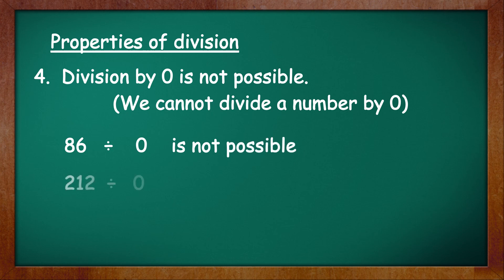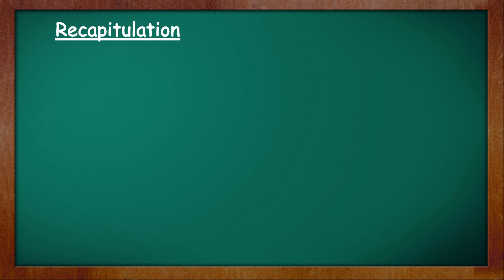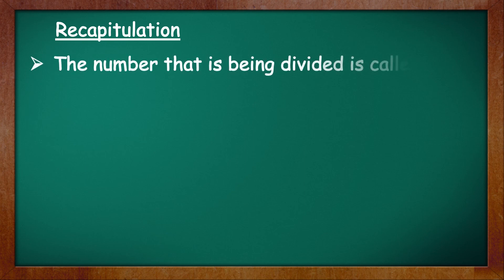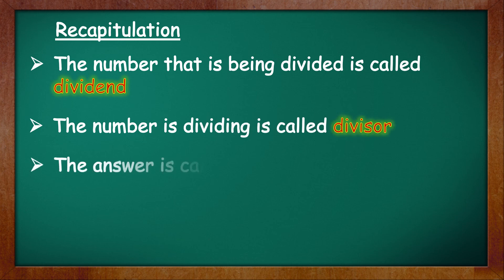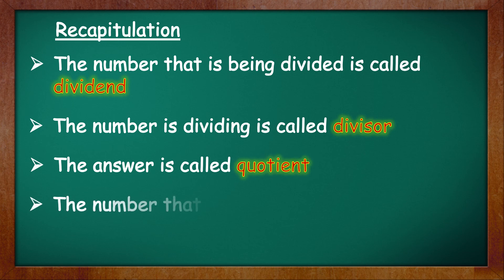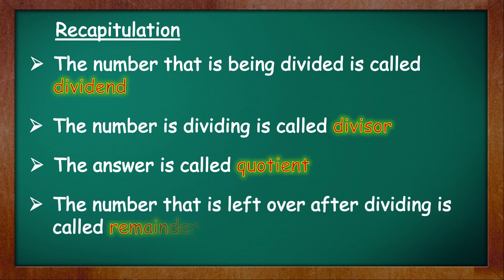A quick recapitulation of the terms of division before we end: the number that is being divided is called the dividend, the number that is dividing is called the divisor, the answer is called the quotient, and the number that is left over after dividing is called the remainder.